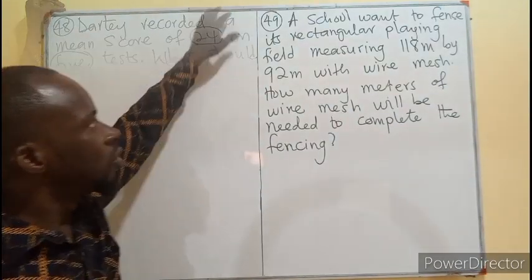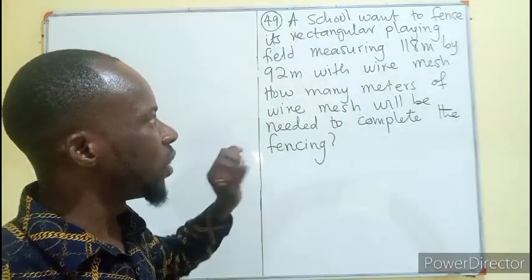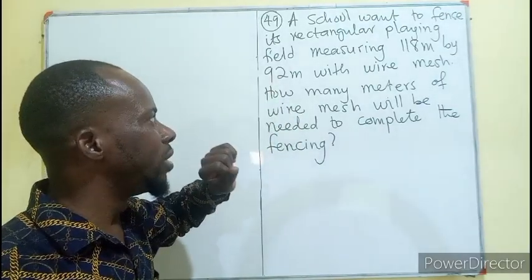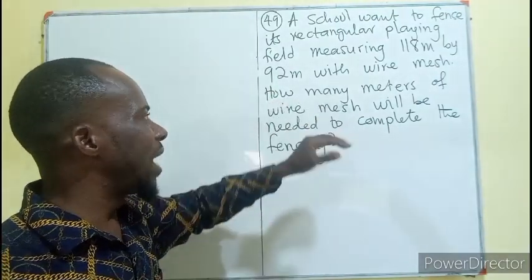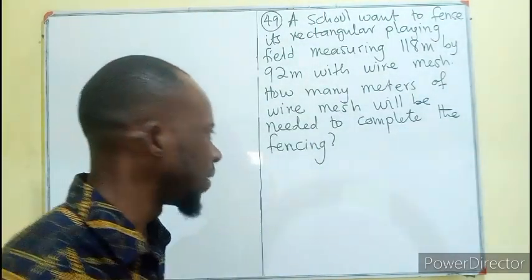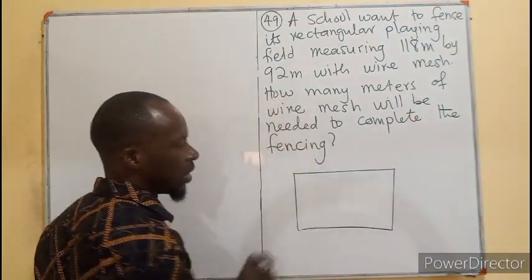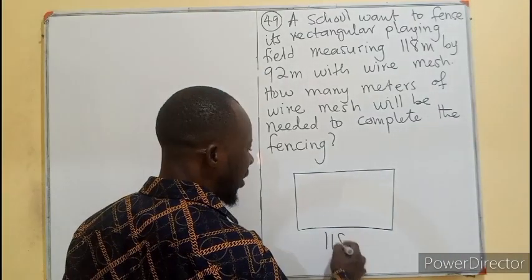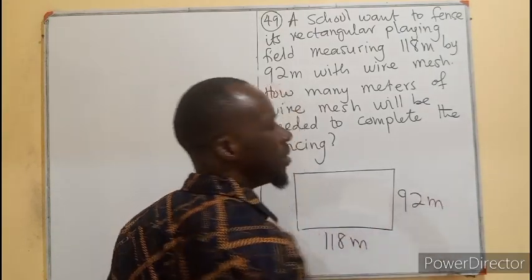Question number 49. A school wants to fence its rectangular playing field measuring 118 meters by 92 meters with wire mesh. So how many meters of wire mesh will be needed to complete the fencing? So let's see. This is the playing field, football park. Measuring 118 simply means the length will be 118 meters. The breadth will be 92 meters.